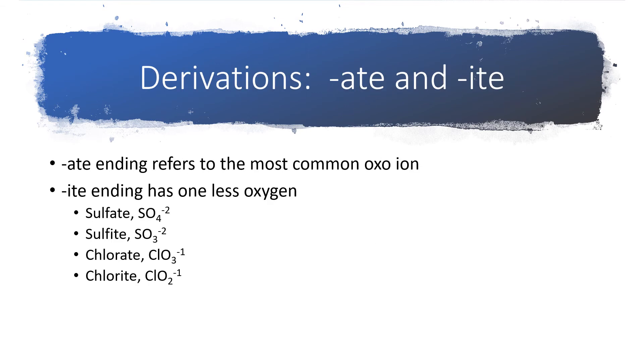So, here is one of the derivatives, the pattern for the derivative. If you have an oxo ion, one that has a nonmetal plus an oxygen, that ends in -ate. That's the most common, most commonly occurring ion that that nonmetal forms with oxygen. But, if we change the ending from -ate to -ite, we are going to take away one oxygen from the formula.